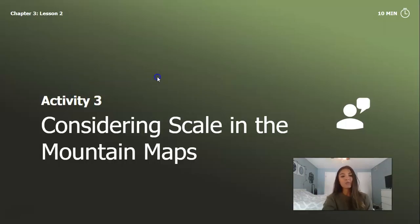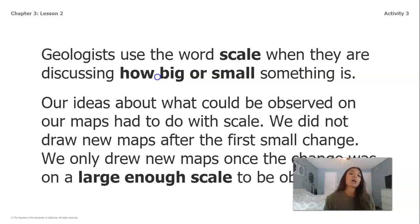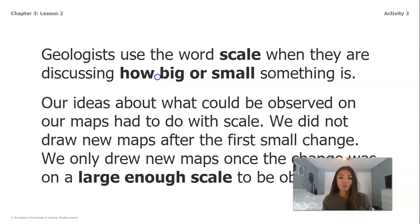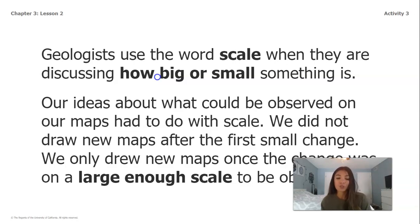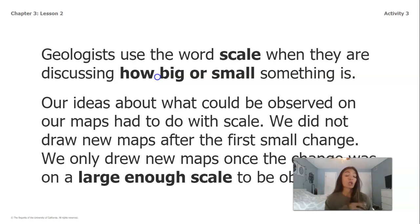We're moving on to the very last part of the lesson, which is considering scale in the mountain maps. Geologists use the word scale when discussing how big or small something is. Our idea about what could be observed on our map has to do with scale — we did not draw new maps after the first small change, and we only drew new maps once the change was on a large enough scale to be observed, based on what it would look like if we took a lot of pom-poms off our model.